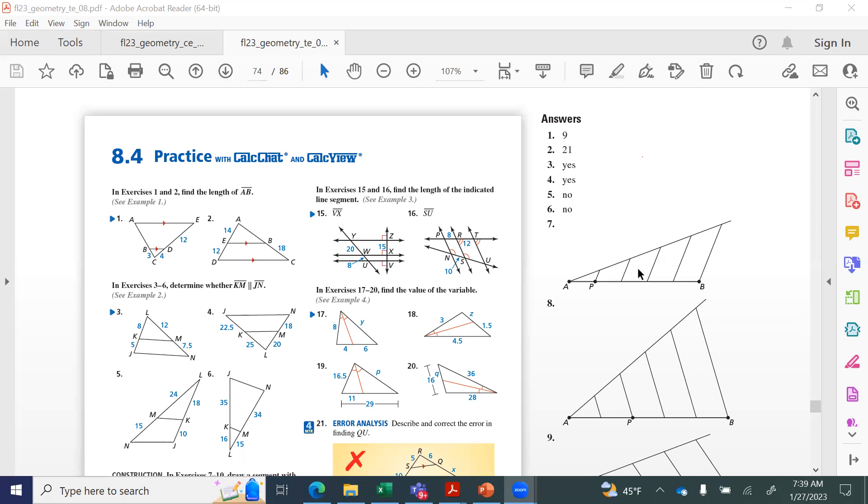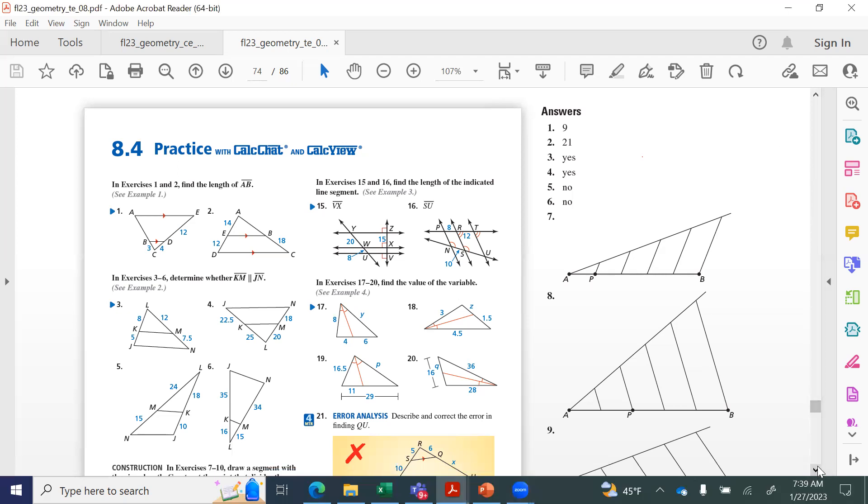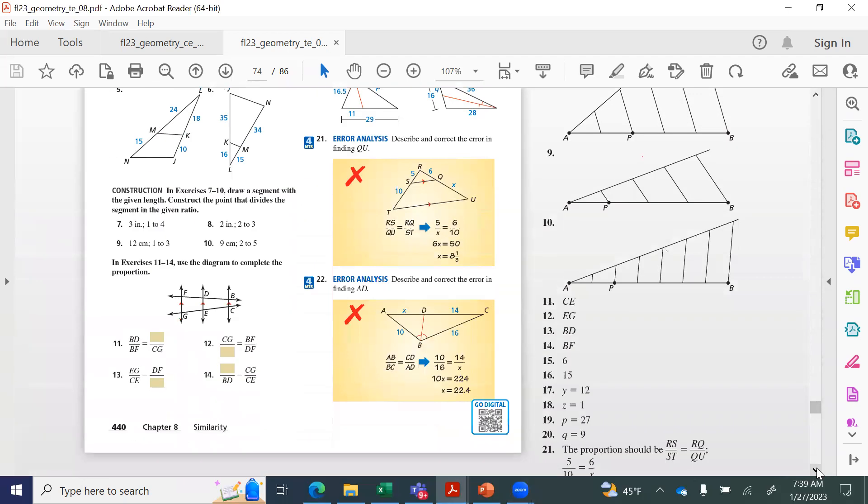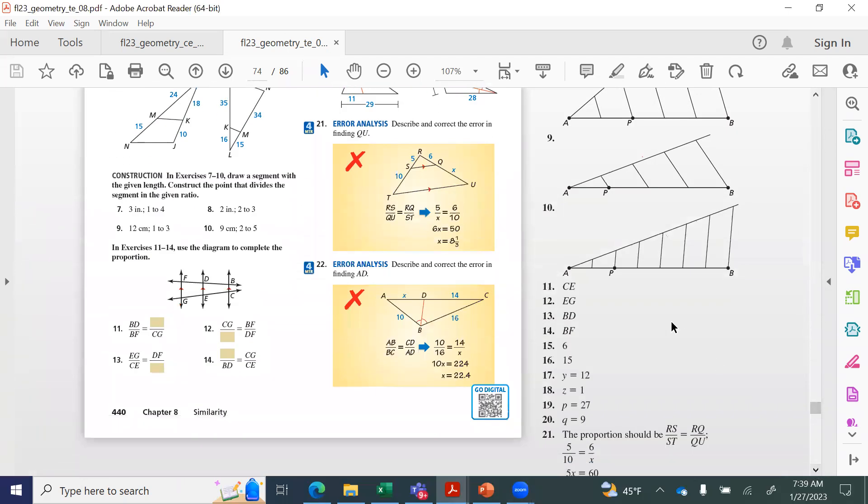Number one was 9, number three was yes, number five was no. When we got to the next section, seven through ten, that was my mistake. They are construction problems. I did skip over the construction. We do not need to do that part. So you did not need seven and nine. Moving on, correct answers: number 11 was CE, number 13 was BD, number 15 was 6, number 17 y was 12, number 19 p was 27.